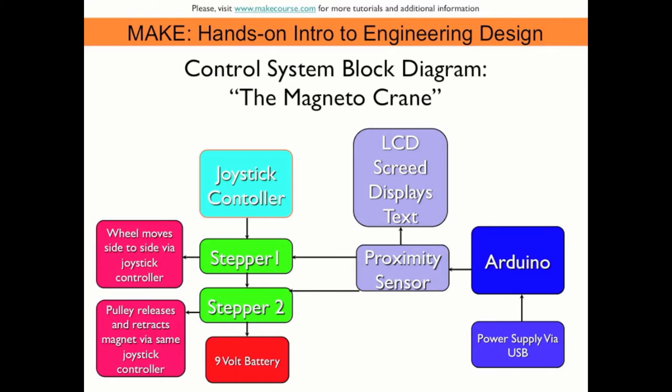Here's my control system block diagram. At the heart of the control system is the Arduino, being powered via USB 5 volts. What's being powered through the Arduino are the proximity sensor, LCD screen, and joystick controllers.